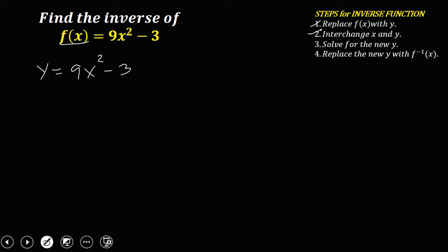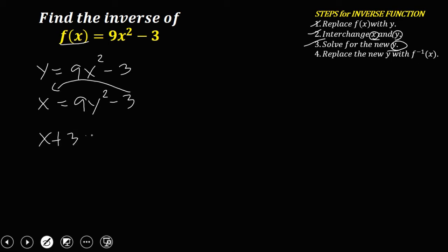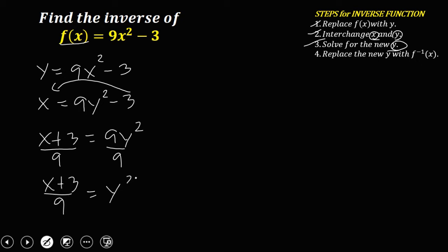Then interchange the x and y, so your x becomes y and your y becomes x. So we have x equals 9y squared minus 3. Then solve for y. Transpose this negative 3 to the left side, so x plus 3 equals 9y squared. Then divide both sides by 9, so x plus 3 over 9 equals y squared.